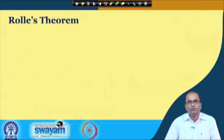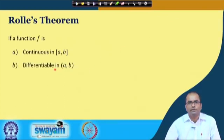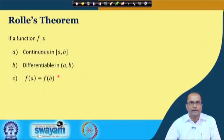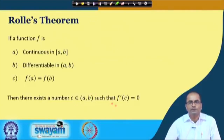What is Rolle's theorem? Rolle's theorem states that if a function of a single variable is continuous in a closed interval and differentiable in an open interval, and there is one more condition which says that the function value at a is equal to the function value at the point b — the two end points take the same value — then the theorem says that there exists a number c in the open interval such that f prime c is equal to 0, meaning there will be a point where the slope of the tangent will be 0.